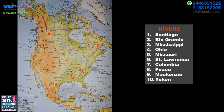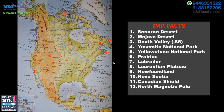Moving on to important physical features of North America, we start with deserts. There are two deserts: the Sonoran Desert and the Mojave Desert. Both are located on the western margins due to the trade wind belt, where offshore trade winds and the Californian cold current together create desert conditions on the western margin of North America.